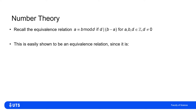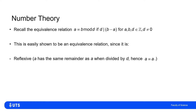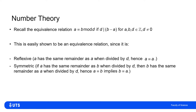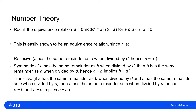We can easily show that this is an equivalence relation because an equivalence relation has to satisfy three properties. This is clearly reflexive because a has the same remainder as a when divided by d, or a minus a is divisible by d because zero is divisible by any integer. It's also symmetric because if a has the same remainder as b, then b has the same remainder as a. And lastly, it's transitive: if a has the same remainder as b, and b has the same remainder as c, then a has the same remainder as c. So it's reflexive, symmetric, and transitive — so it's an equivalence relation.